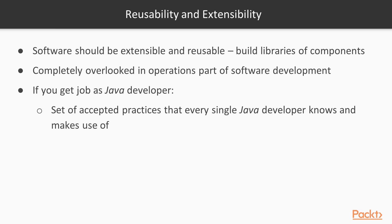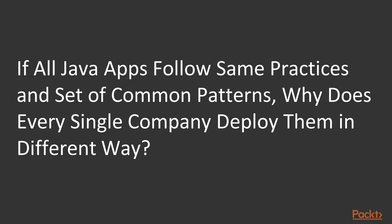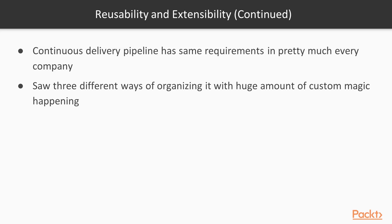During college years, one of the things in common across all the different subjects was reusability and extensibility. Your software should be extensible and reusable so that we can potentially build libraries of components, creating the engineering sweet spot. This has been completely overlooked in the operations part of software development until recent years. If you get a job as a Java developer in a company, there is a set of accepted practices that every single Java developer in the world knows and makes use of, so you can nearly hit the ground running without too many problems. Now, let's raise a question: if all Java apps follow the same practices and set of common patterns, why does every single company deploy them in a different way? A continuous delivery pipeline has the same requirements in pretty much every company in the IT world, but I have seen at least three different ways of organizing it, with a huge amount of custom magic that only one or two people within the company know of.